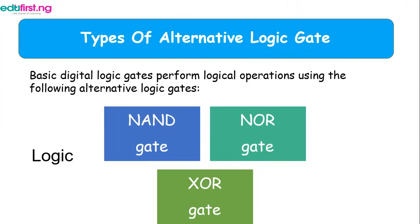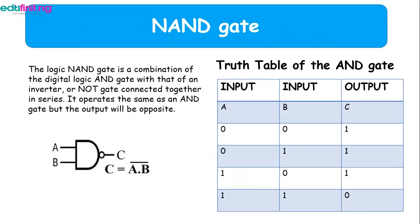The types of alternative logic gates are the NAND, NOR, and exclusive OR gates. The NAND gate is a combination of a digital logic AND gate and an inverter or NOT gate — it's an AND gate where the output is inverted.